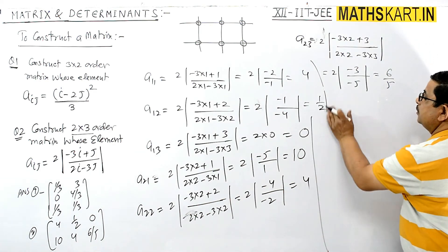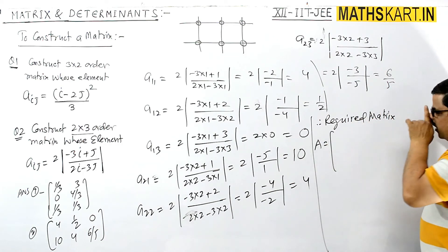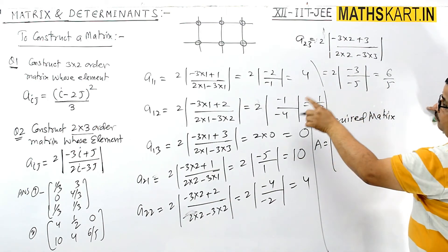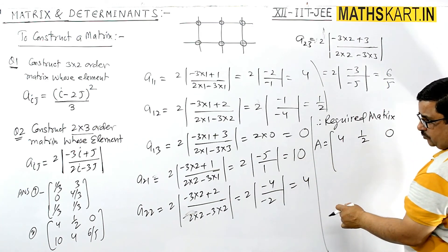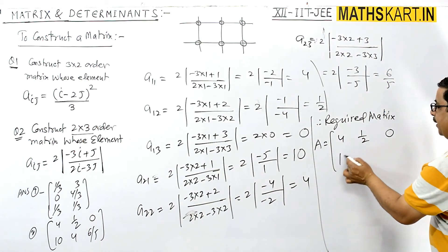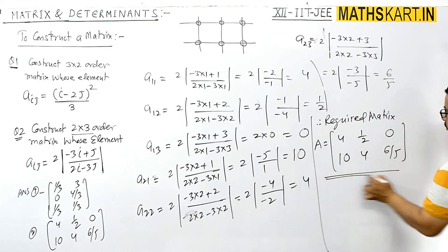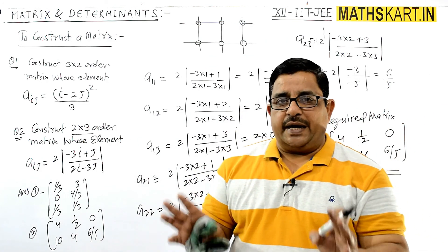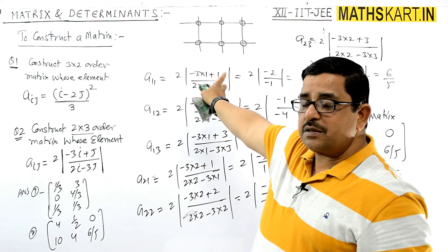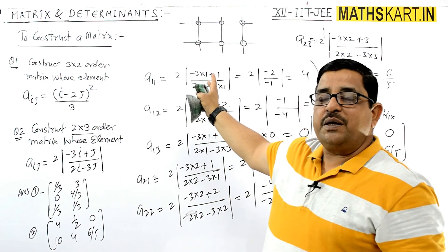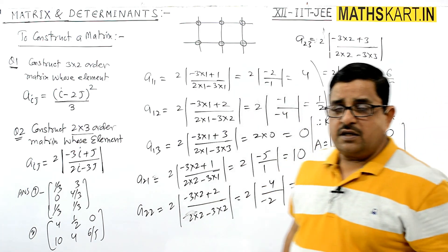Therefore, the required matrix equals: first row [4, 1/2, 0], second row [10, 4, 6/5]. So the matrix is created. To construct a matrix is a very easy process — the general element is given. First make a grid, then place the i and j values for each position to get each member, and write down the full matrix.